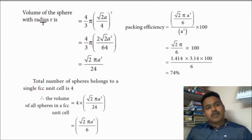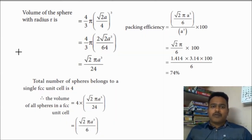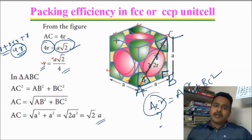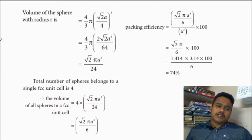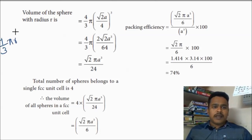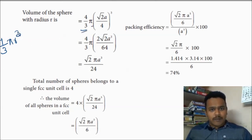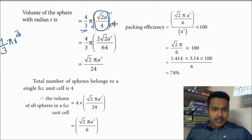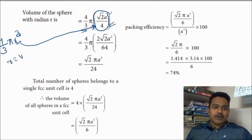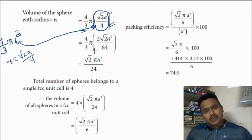Now, the volume of the sphere with radius R. We are observing spheres; every sphere has the same radius. The formula for the volume of one sphere is (4/3)πR³. In place of R, we substitute √2·A/4, because R = √2·A/4. After substituting, we get the volume of one sphere in terms of A.